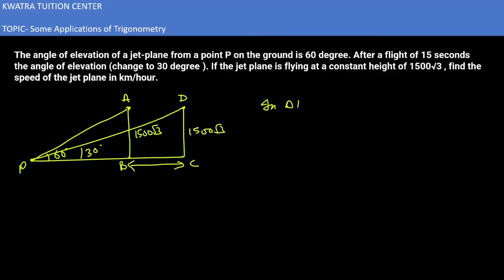In this case, what do we consider in triangle? It would be first of all A, B, P. Tan 60 is equal to perpendicular 1500 root 3 over PB. Tan 60 is root 3, so 1500 root 3 over PB. So root 3 from root 3 cancel. PB value is 1500 meter.